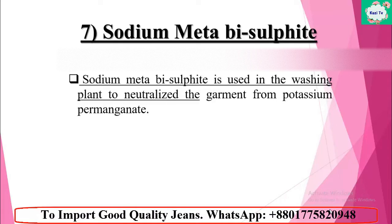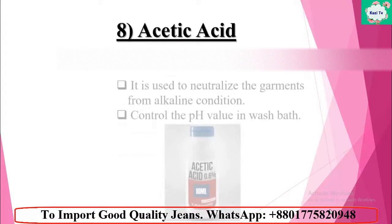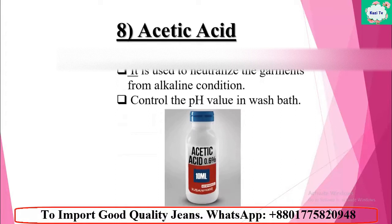Number seven: sodium metabisulphite. Sodium metabisulphite is used in the washing plant to neutralize the garments from potassium permanganate. It is also used to neutralize the garments after bleaching. Sodium metabisulphite leads the garments to a blue tone.